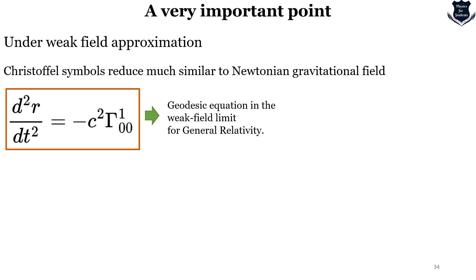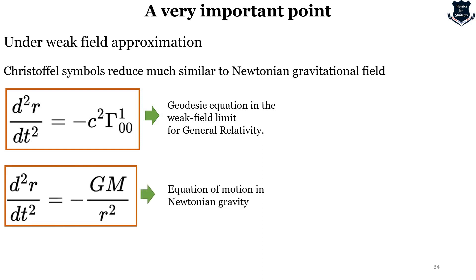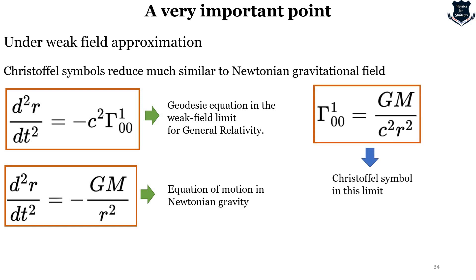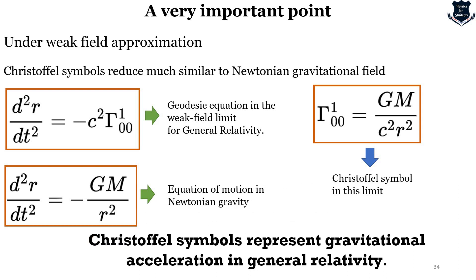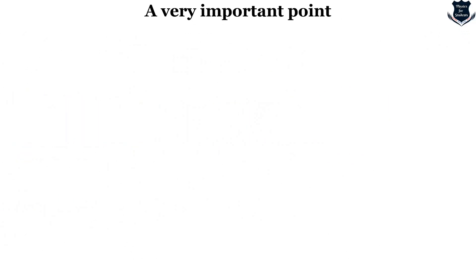Under weak field approximation, when the particles and forces are moving very slowly so the mathematics are easier, the Christoffel symbols reduce to something very similar to the Newtonian gravitational field. The geodesic equation in the weak field limit of General Relativity gives d²r/dt², and minus GM/r² is the equation of motion in Newtonian gravity. The Christoffel symbol Γ⁰₀₀ in this limit actually represents gravitational acceleration in General Relativity. Under weak field approximation, the Christoffel symbols reduce to Newtonian gravity — again establishing that you need a complete understanding of Newtonian gravity before learning General Relativity.